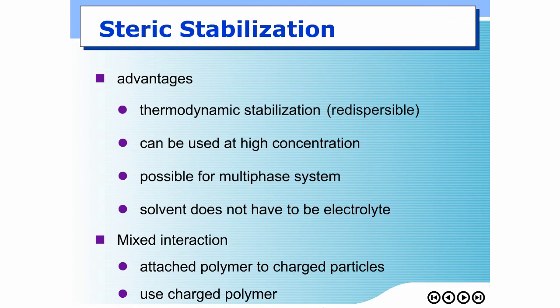For this lecture in general, we talked about agglomeration, which is a very common problem for nanoparticle synthesis. In order to obtain nanoparticles, we need to prevent agglomeration, and there are two main ways to do so: electrostatic stabilization, which utilizes the charge around particles, and steric stabilization, which utilizes long-chain polymer to prevent agglomeration. For the next lecture, we will start the synthesis of nanoparticles.